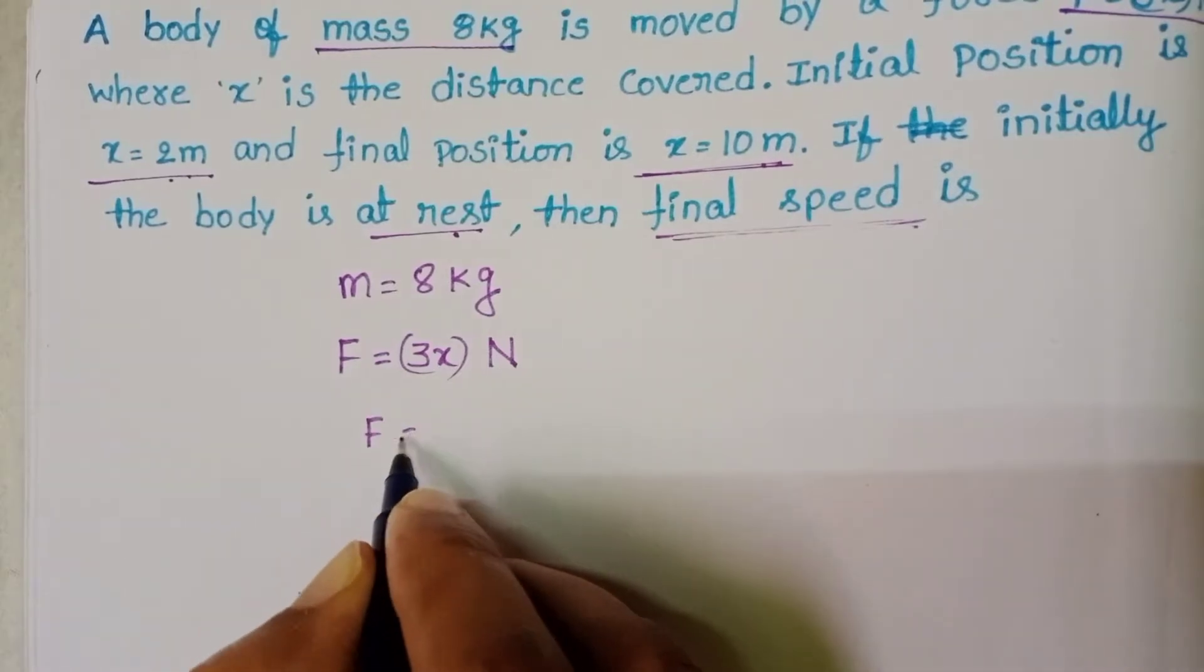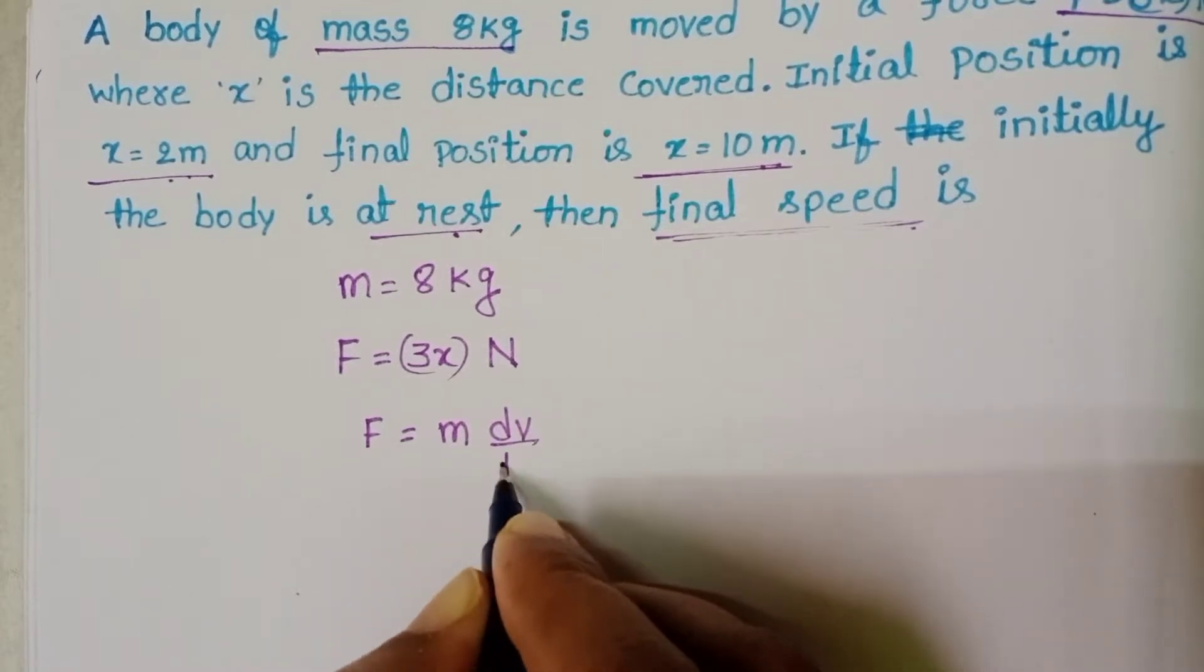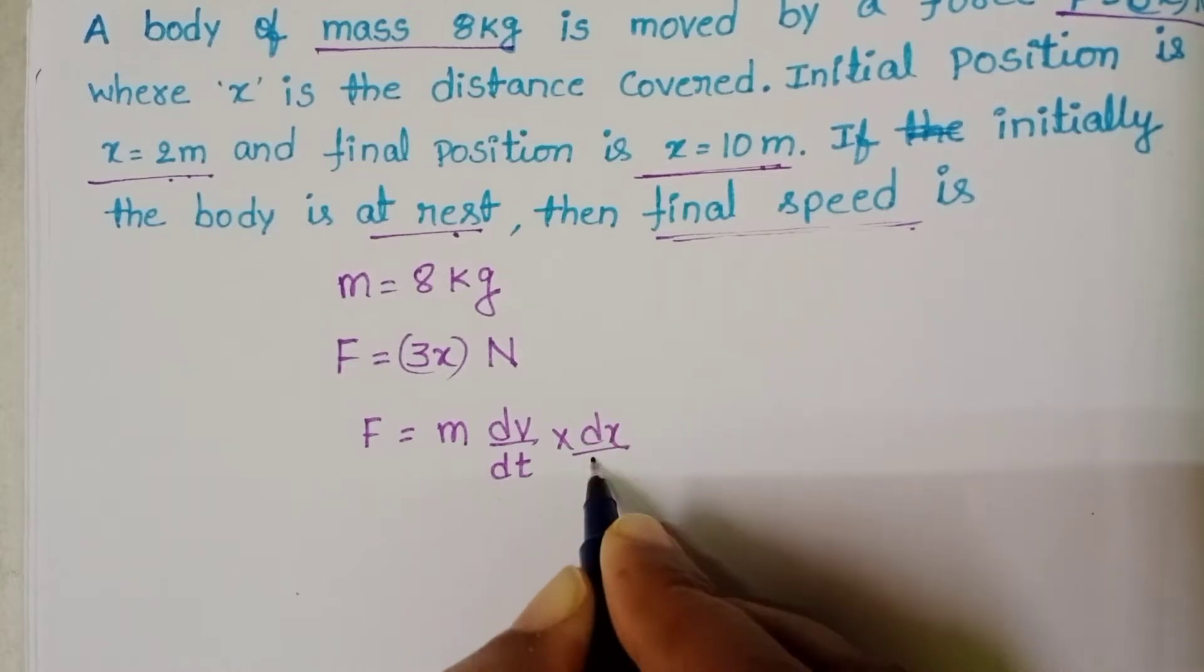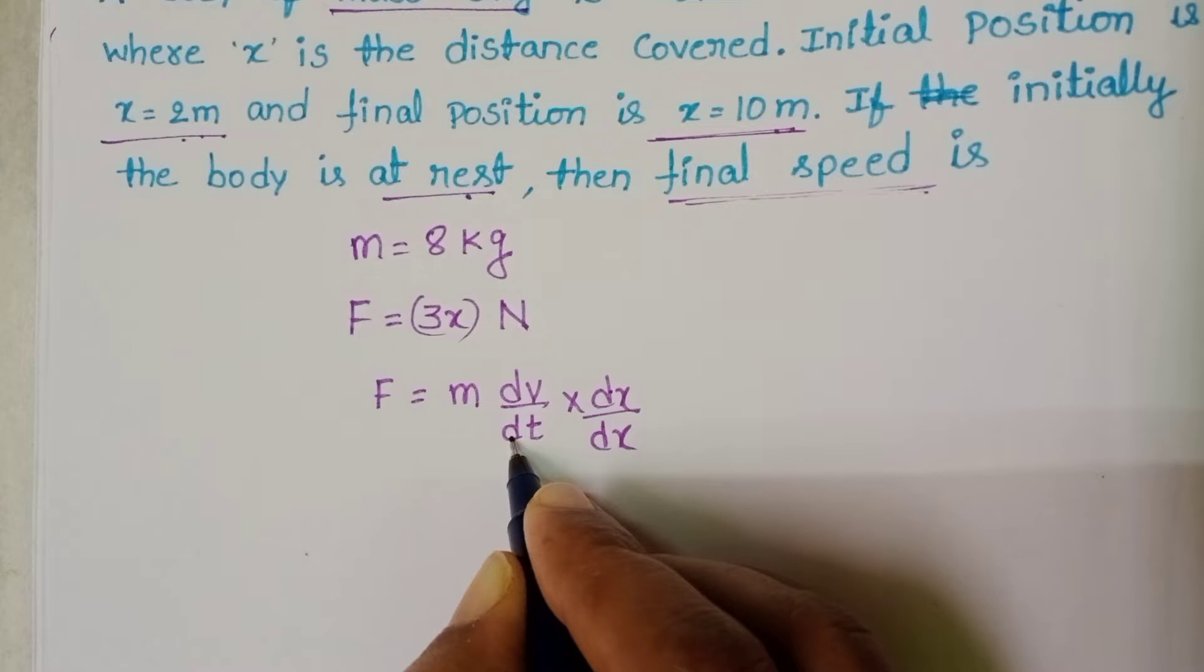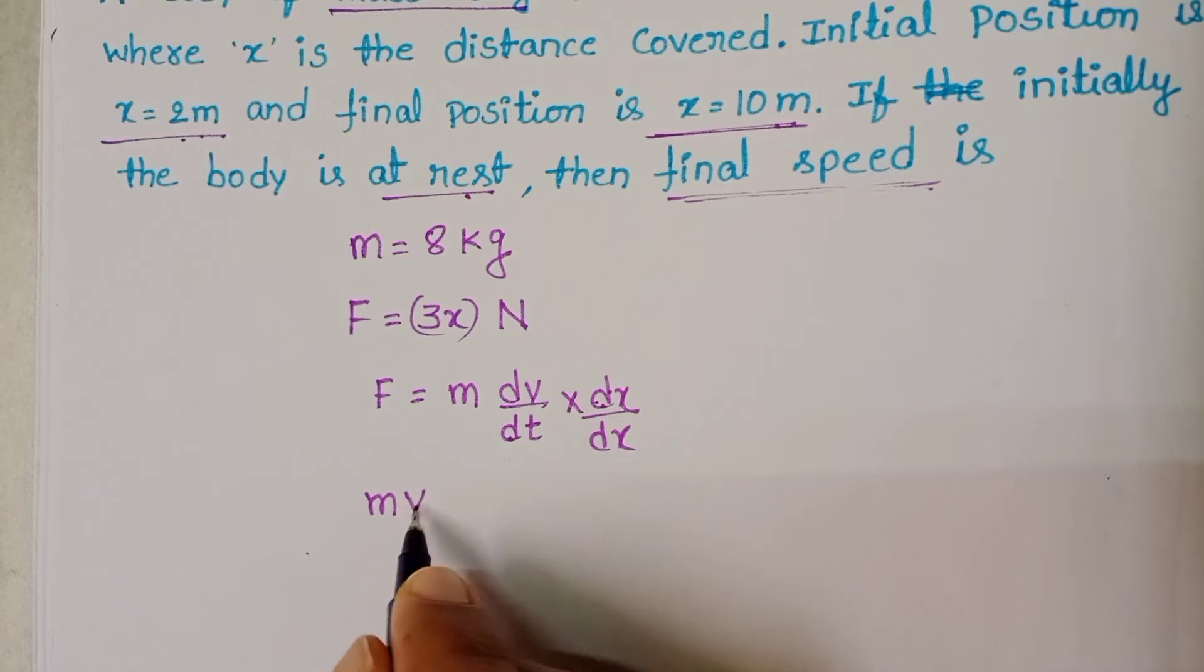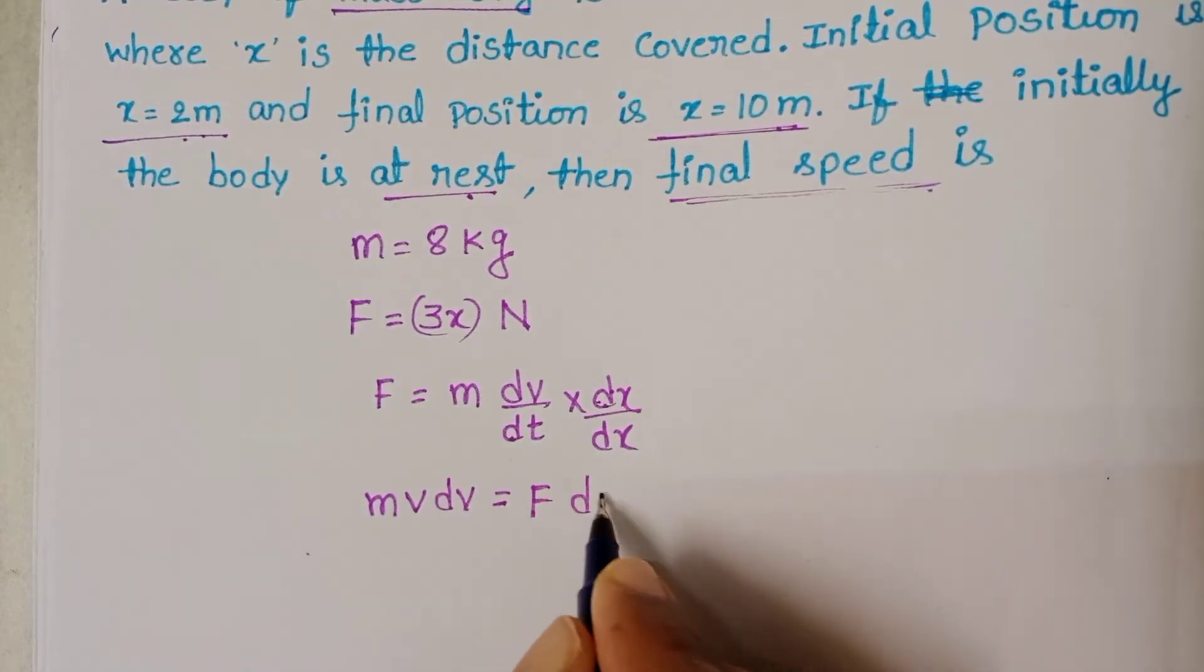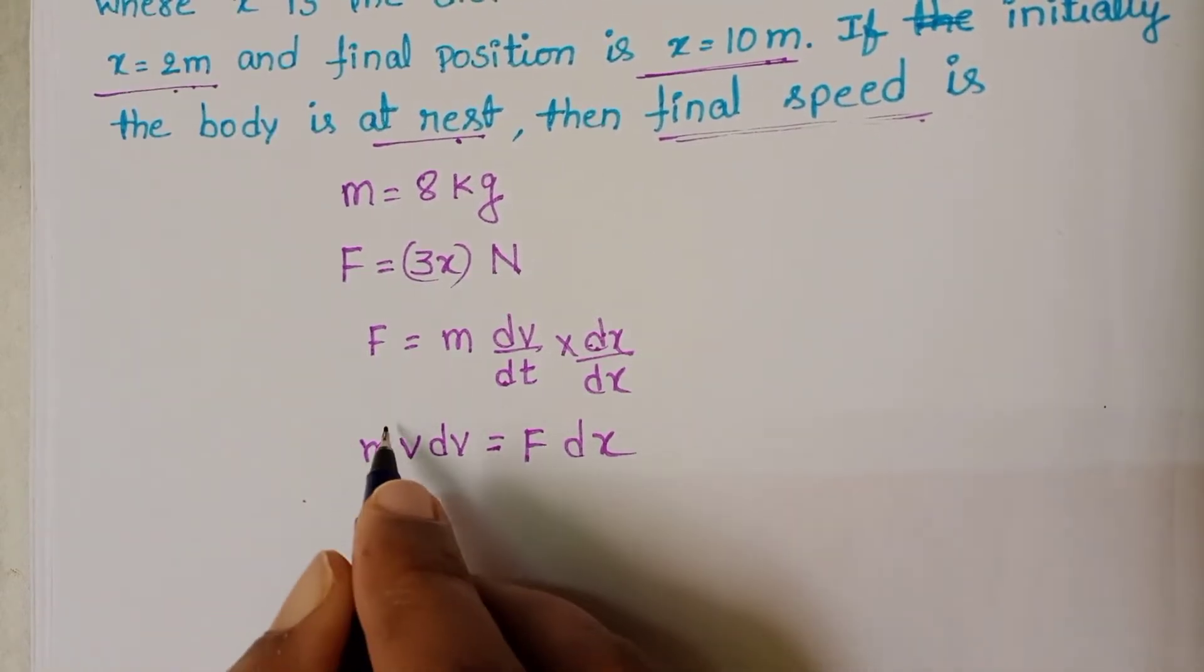Force equals m into dv by dt. But force is a function of x, that's why multiply and divide with dx. Here we know dx by dt equals v. Then it becomes mv dv equals F into dx. Take integration on both sides. m is constant.